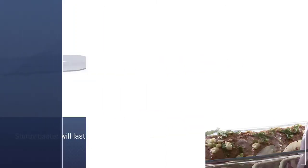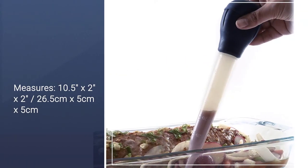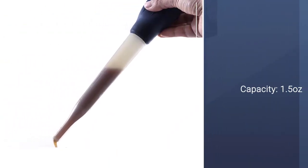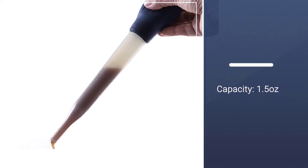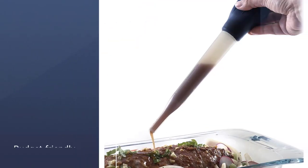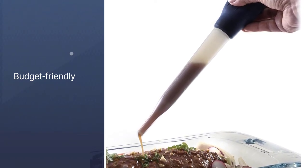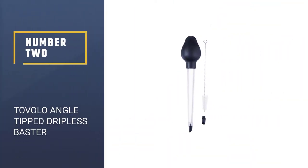But it's inexpensive enough to keep a few on hand for nights when you're cooking more than one roast. This baster works better than some expensive stainless alternatives and it's a great value for the price. Number two, Tavolo Angle Tipped Dripless Baster.